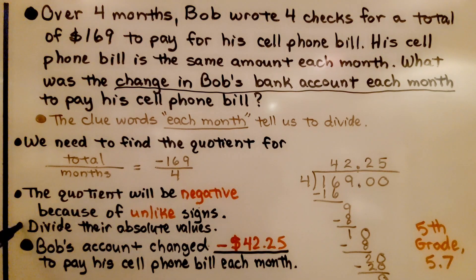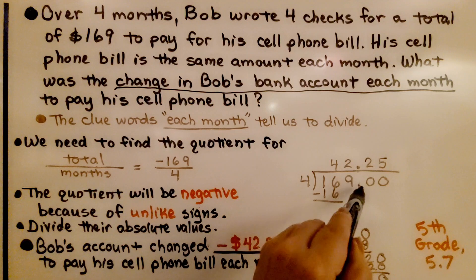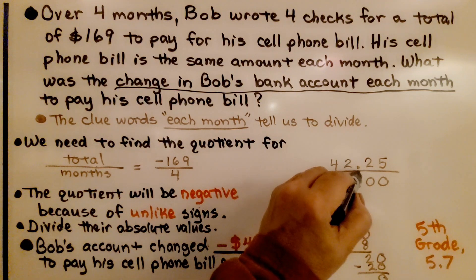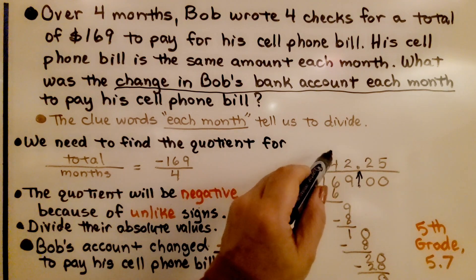We divide their absolute values: 169 divided by 4. To complete this, we need to add a decimal point and some zeros. Remember, the decimal point in the quotient goes straight up. We're going to get $42.25.